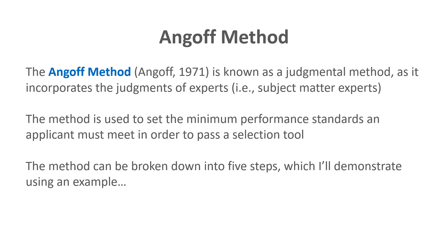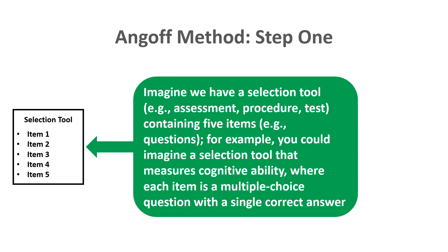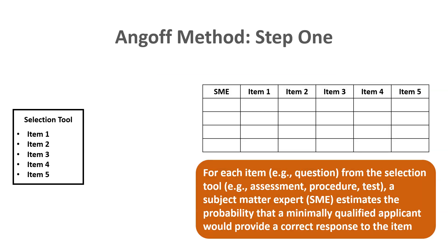For step one, let's imagine we have a selection tool that contains five items — five questions. For example, a selection tool that measures cognitive ability, where each item is a multiple-choice question with a single correct answer. For each item, a subject matter expert will estimate the probability that a minimally qualified applicant would provide a correct response.